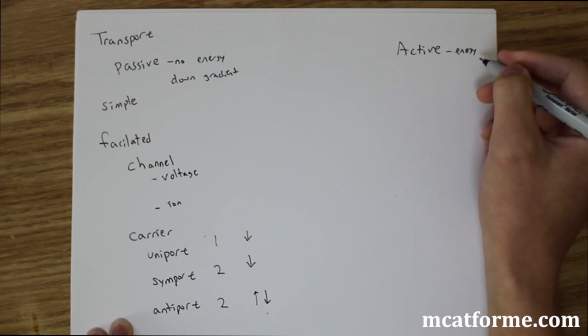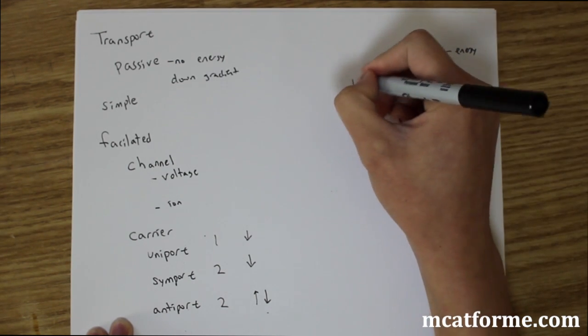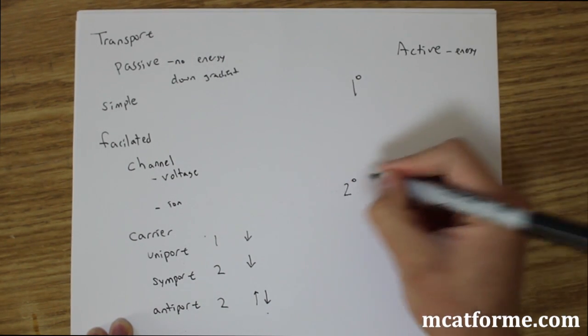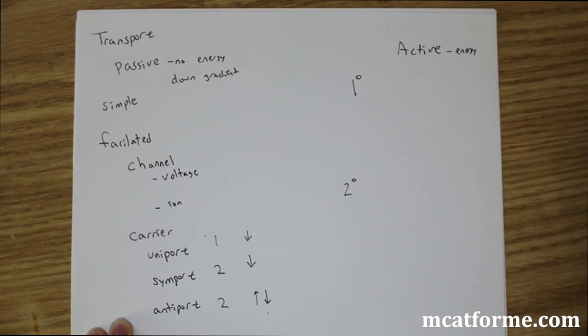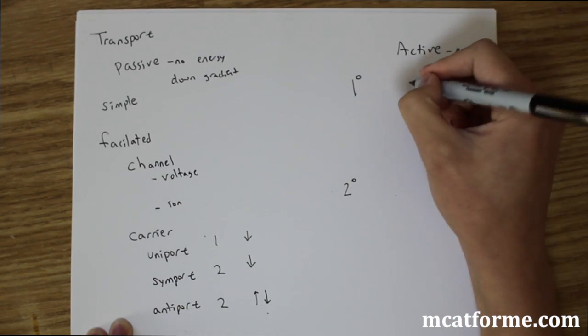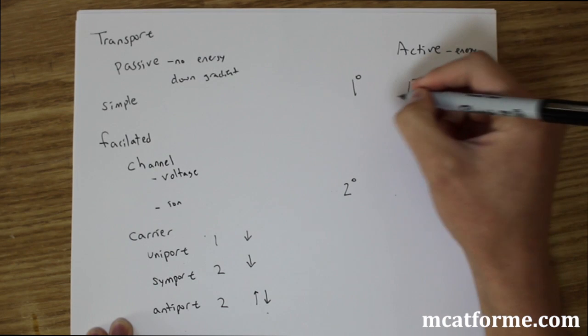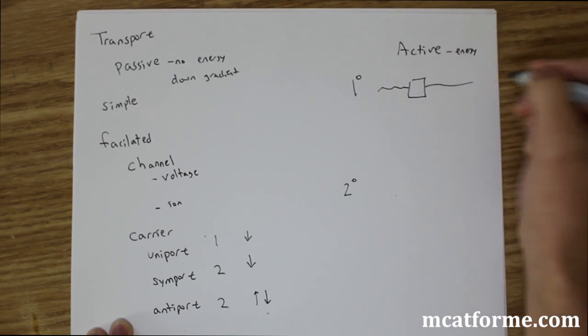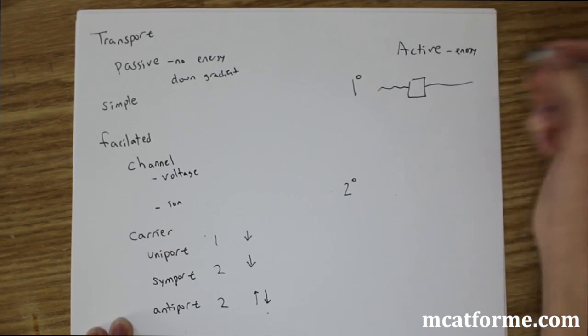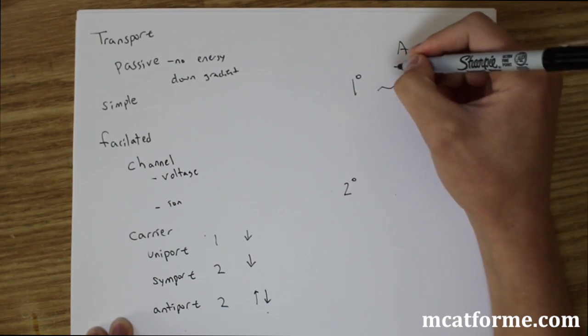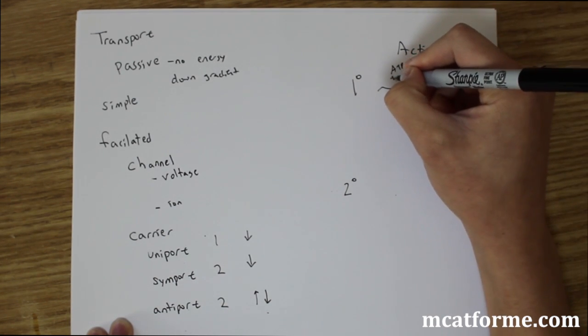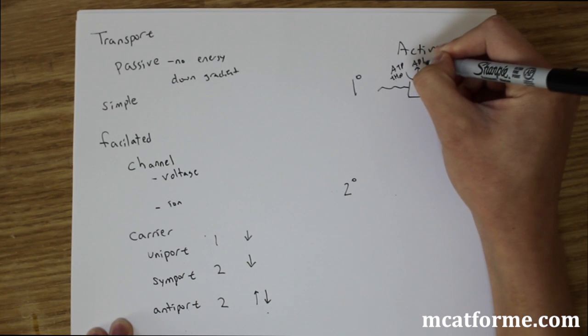And so we're going to look at active transport next and it's broken up into its primary and secondary. And just so we know is that active transport always will use some type of protein. So imagine if this is our protein and this is our plasma membrane. So active primary transport will use ATP hydrolysis directly. So we have this ATP hydrolysis.